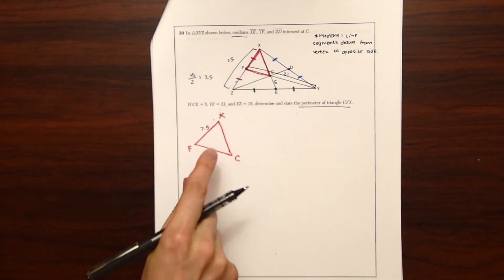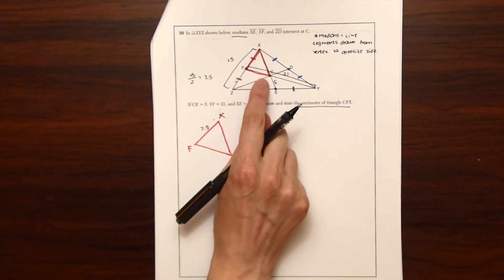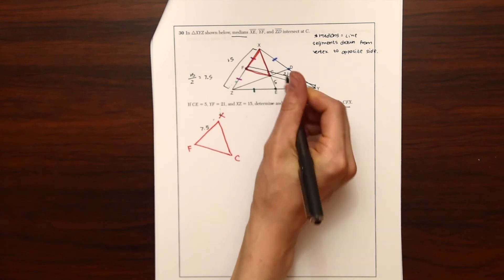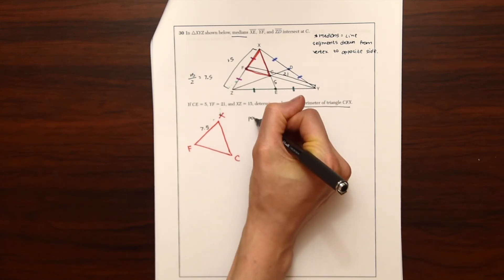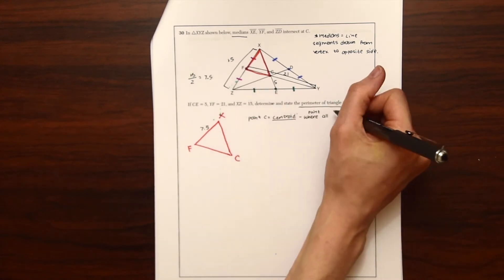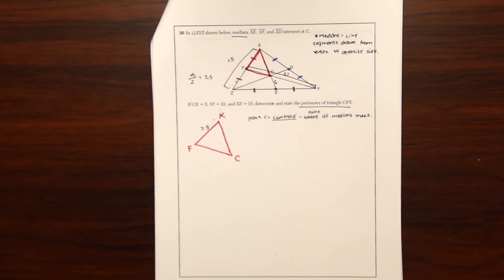So what about the rest of the lengths of this triangle? So a really interesting property about medians is that when they come together at the centroid, so this is the point where they come together is called the centroid, this is where all medians meet. An interesting property about centroids is that they always have this ratio of the medians of 2 to 1 or 2 thirds to 1 third.